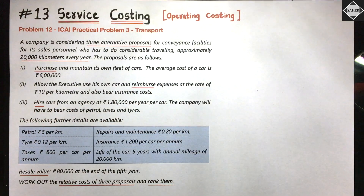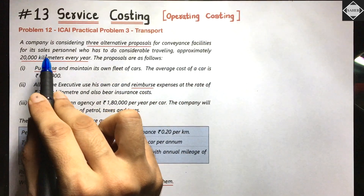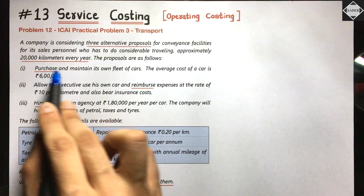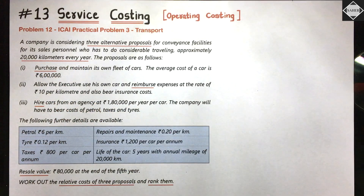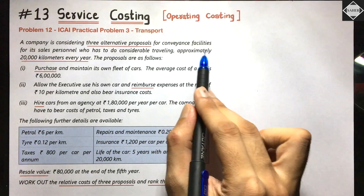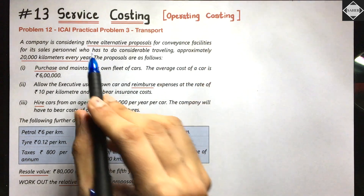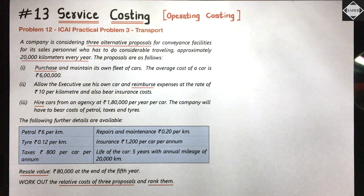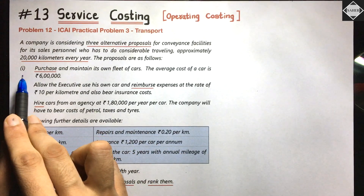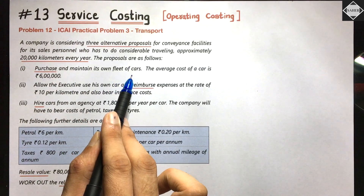The company has sales personnel who have to travel 20,000 kilometers every year, and for this the company needs to arrange transport facilities for them. Conveyance facilities means transport facility. The company has three alternative proposals. The first option is to purchase and maintain its own fleet of cars so that sales employees can travel.